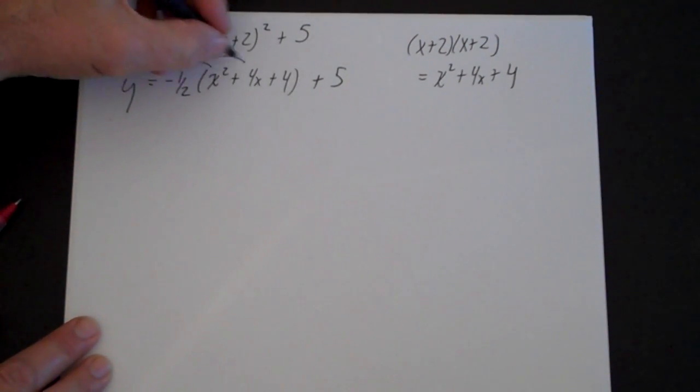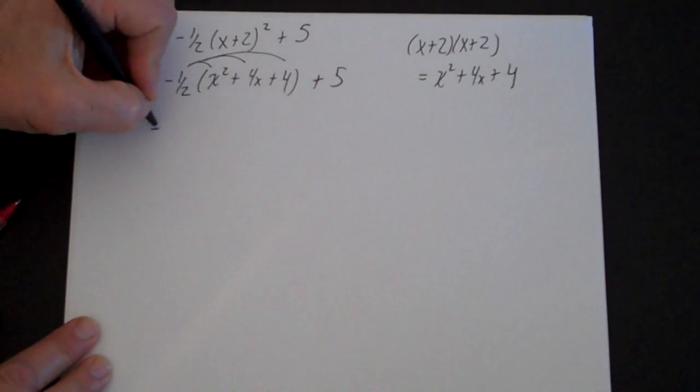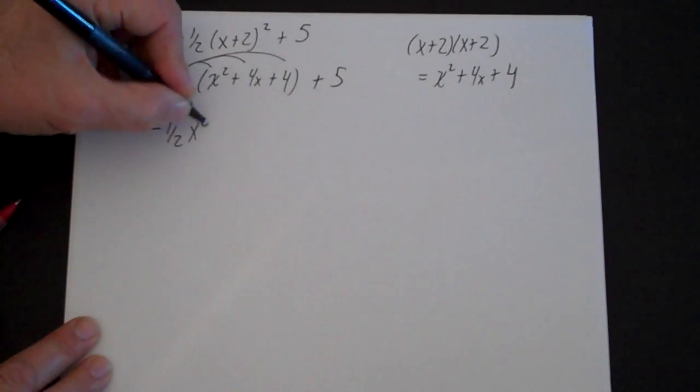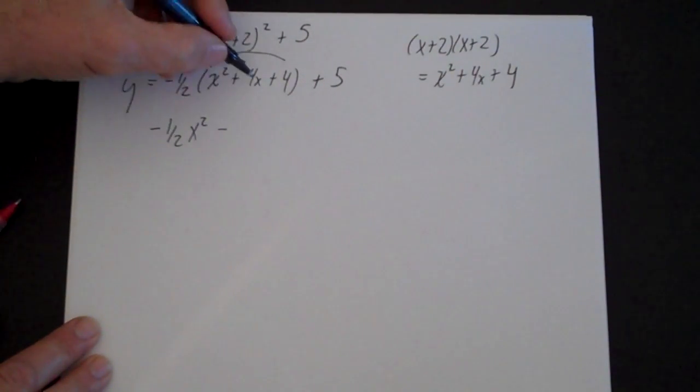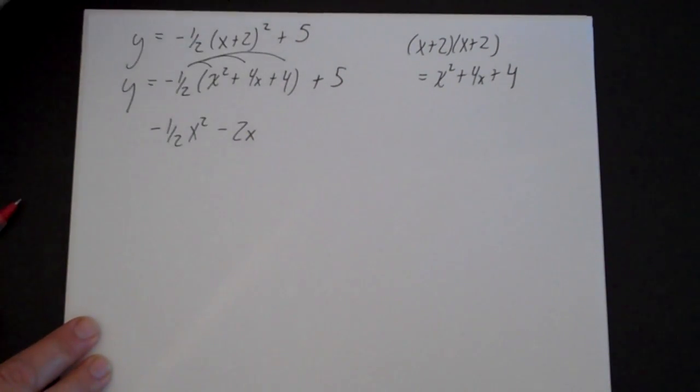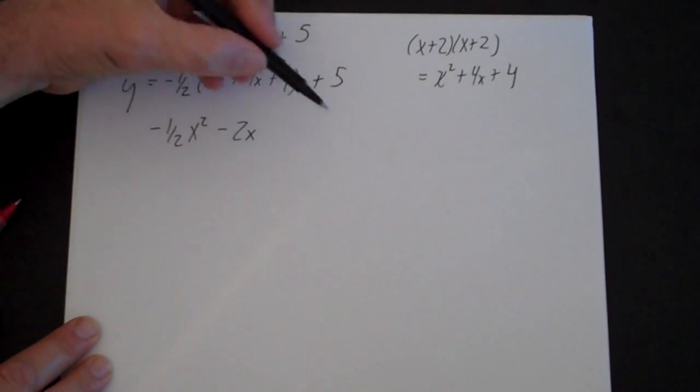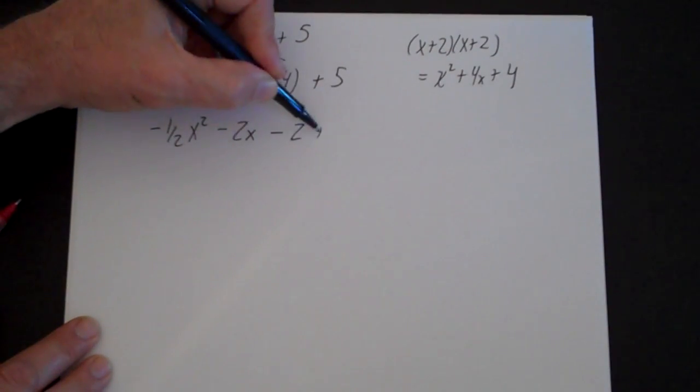I am going to distribute the -1/2 and I get -1/2x². -1/2 times 4 is 2, so that is -2x. -1/2 times 4 is -2 plus 5.